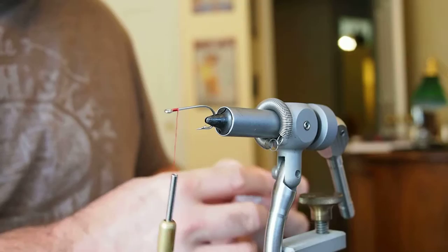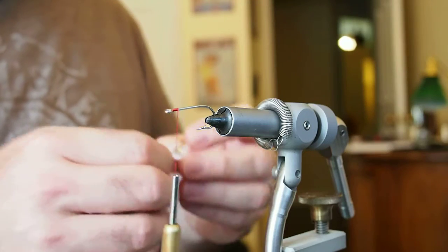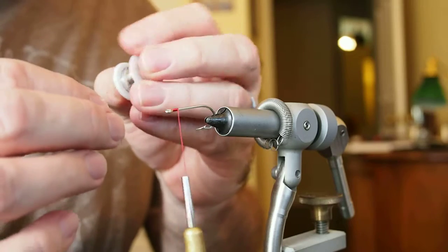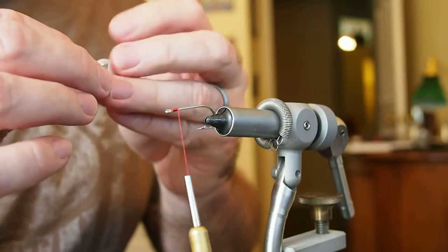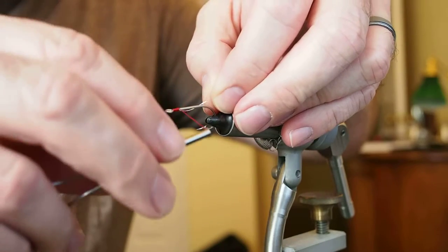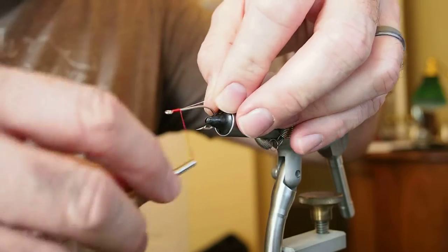Next, I'm going to tie in some fine tinsel. I'm not sure what brand this is. This is a very small tinsel, I'd say like a mil wide. So I'm just going to go ahead and tie that in on the side there.